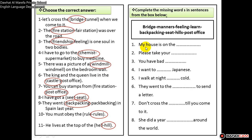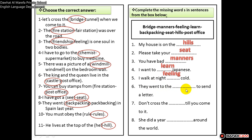Next sentences: 'My house is on the hills.' 'Please take your seat.' 'You have bad manners.' 'I want to learn Japanese' — Japanese is a language so it takes the verb learn. 'Feeling cold.' They went to the post office to send the letter. 'Don't cross the bridge until you come to it.' 'She did a year backpacking around the world.'